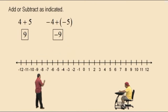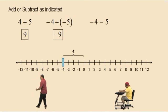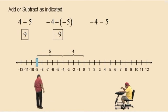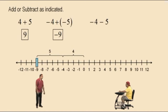How about this one? Negative 4 subtract 5. Let's enter a negative 4 on the number line. Now subtraction means move to the left, and if we subtract 5, we obviously end up at negative 9. It's the same answer as the one before. Why is that?